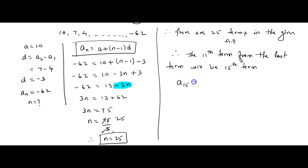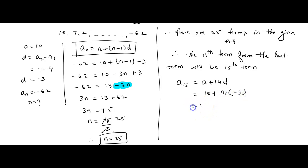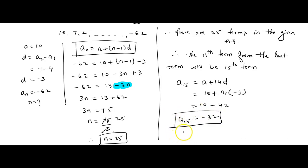Now, a15 = a + 14d = 10 + 14 × (minus 3) = 10 minus 42 = minus 32. So the 15th term is minus 32, which is the value of the 11th term from the last term. That is our final answer: minus 32.